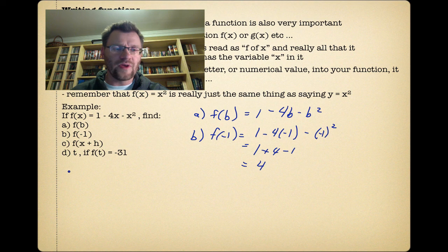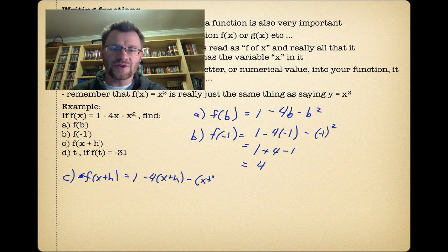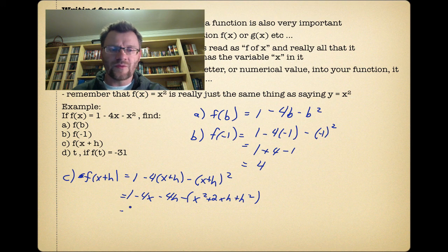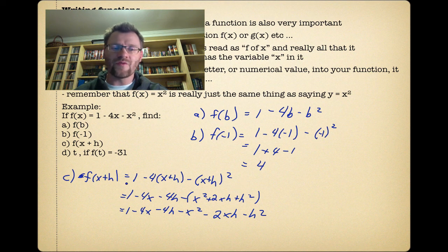Part C is a little more involving because we're trying to find f(x+h). When we have f(x+h), we need to plug in an x+h into those x values. So we get 1 - 4(x+h) - (x+h)². And now we need to expand this whole thing, combine like terms. So we get 1 - 4x - 4h minus x² + 2xh + h² squared. And then there's a negative here. So we get 1 - 4x - 4h - x² - 2xh - h². And we can't combine any of these terms, so that's as good as it gets.